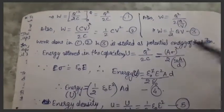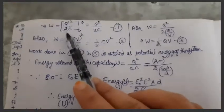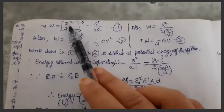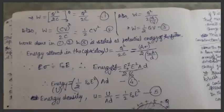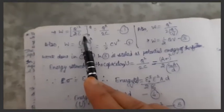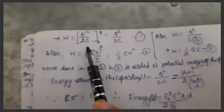The integration of q dash is q dash square by 2. You are well aware of integration process which has been taught in class 11. So integration of q dash is q dash square by 2, and c is already there as a constant.